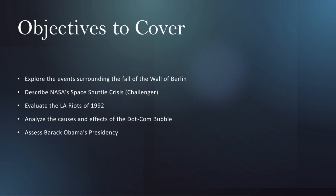First we're going to start on the date of November 9th, 1989, the day the Berlin Wall fell. The wall, which had separated East and West Berlin since 1961, became a symbol of the Cold War. Its collapse marked the end of an era, signifying the reunification of Germany and the beginning of a new chapter in global geopolitics.